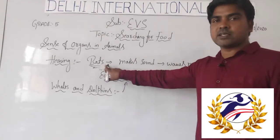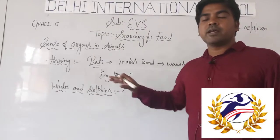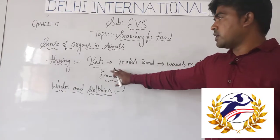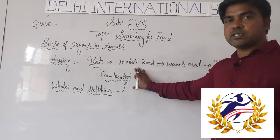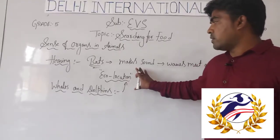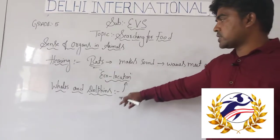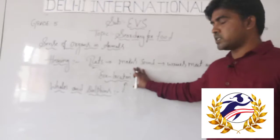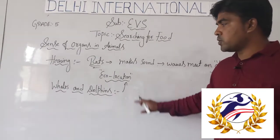To summarize: the bat makes sound, the waves meet an object and create echoes, and those echoes travel back towards the bat. Through this process, bats identify and catch their food. This process is called echolocation. Bats, whales, and dolphins all use echolocation to catch or identify their prey.